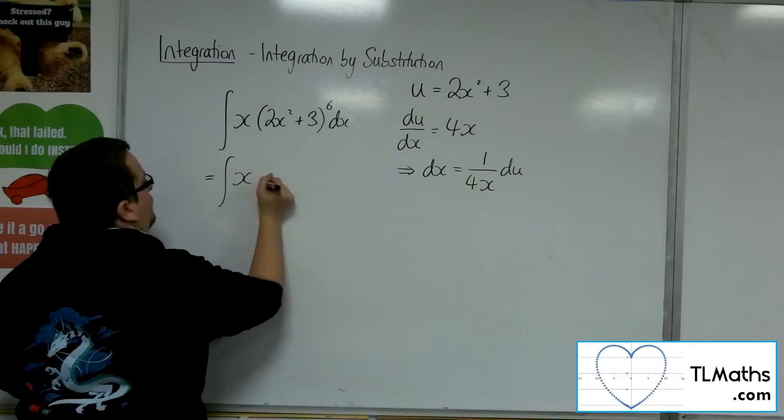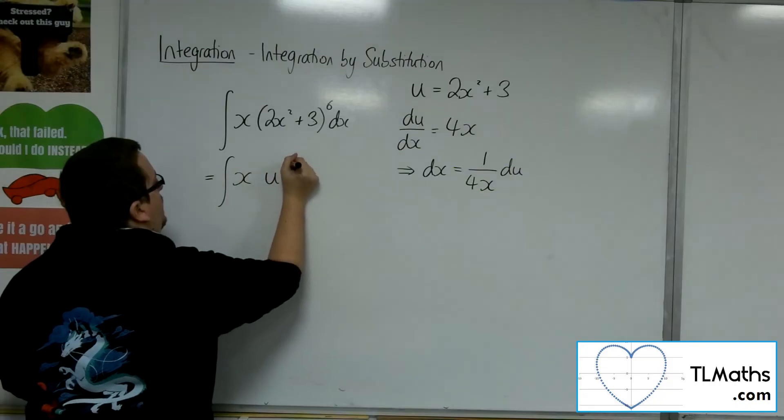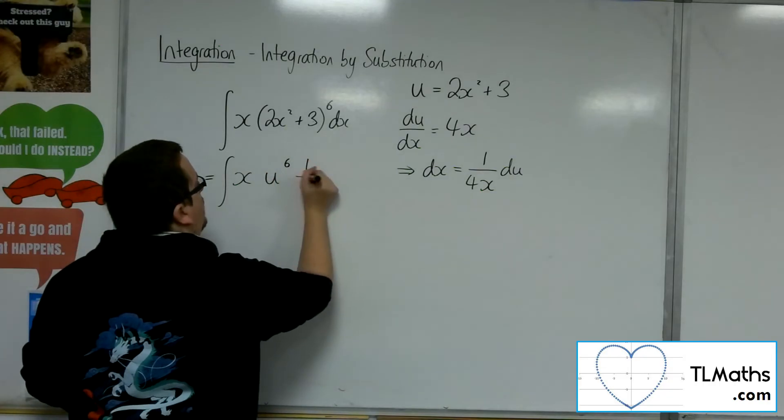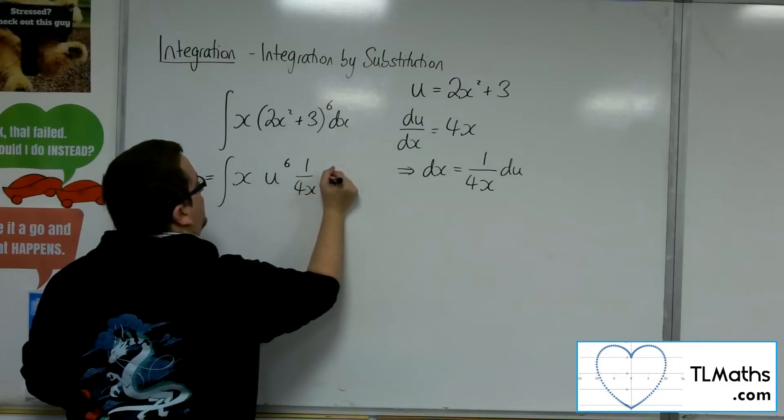So we've got the x. We've got u to the power of 6. dx is 1 over 4x du.